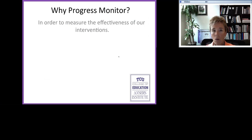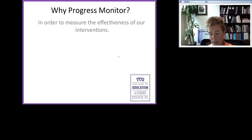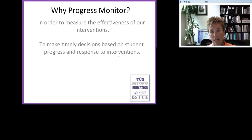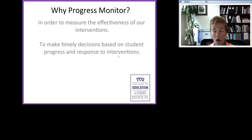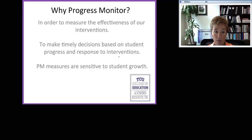So why do we progress monitor? We progress monitor in order to measure the effectiveness of our interventions — that was clear in the assessment cycle shown earlier. We also progress monitor to make timely decisions based on student progress and response to interventions. One of the strengths of an RTI model, if implemented correctly, is that we can identify student areas of weakness early, and intervene early and often. These interventions then need to be measured — that's why we use progress monitoring.